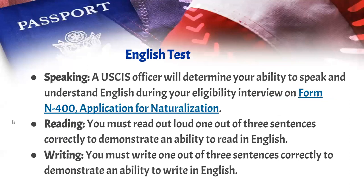For the English test, you must demonstrate ability in speaking, reading, and writing in English. For the speaking part, a USCIS officer will determine your ability to speak and understand English during your eligibility interview on Form N-400, your application for naturalization. They will ask you questions about that application — what is your name, where are you from, about your family — testing your speaking ability and your ability to understand that information.